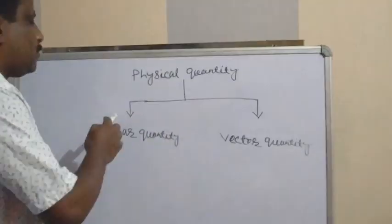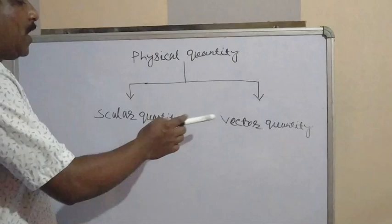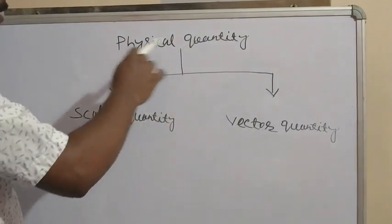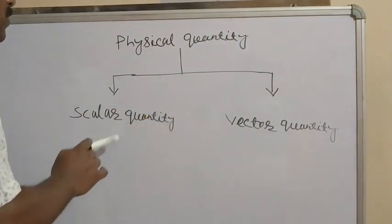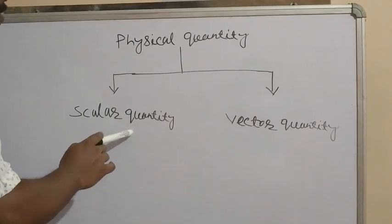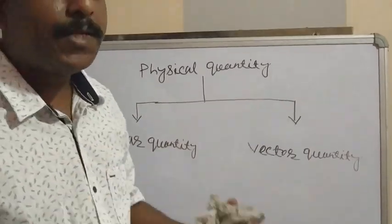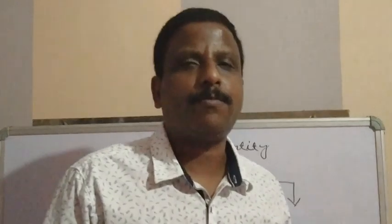Now, different physical quantities are involved in motion. All physical quantities are classified into two categories: one is scalar quantity and another is vector quantity.